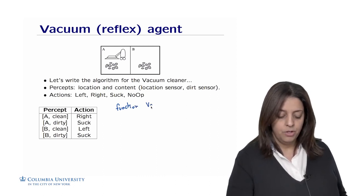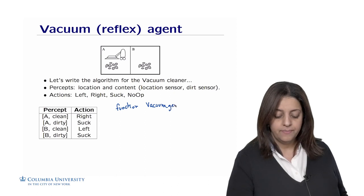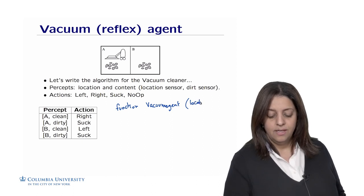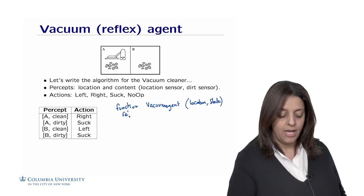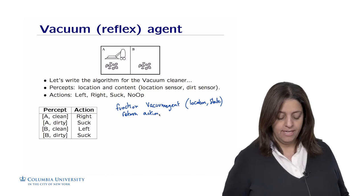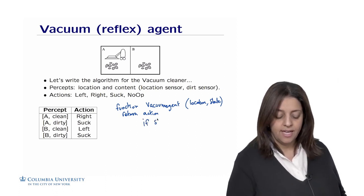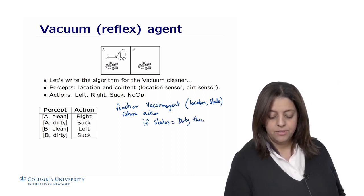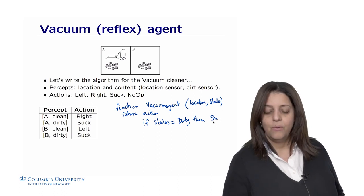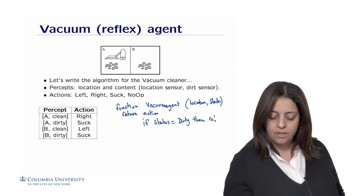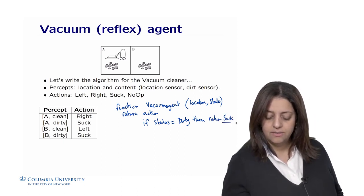Let's call it 'vacuum_agent.' This function requires two parameters: the location and the state — whether it's dirty or not. The function will return the action to do based on the lookup table. It's a simple if-statement: if the status of the room is dirty, then return the action 'suck.'